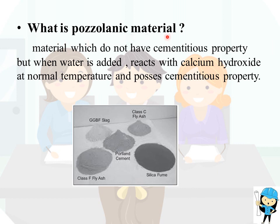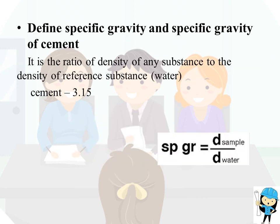What is pozzolanic material? A material which does not have cementitious property, but when water is added reacts with calcium hydroxide at normal temperature and then possesses cementitious property — this kind of material is called a pozzolanic material. The most commonly used pozzolanic materials are GGBS slag, fly ash, silica fume, etc.